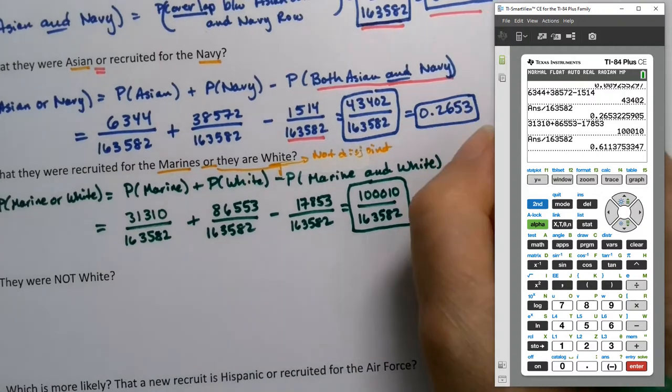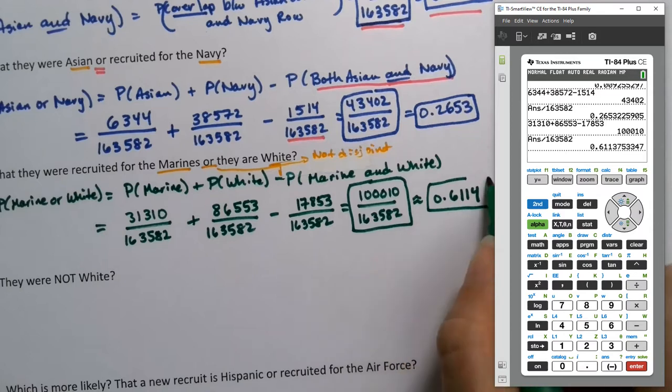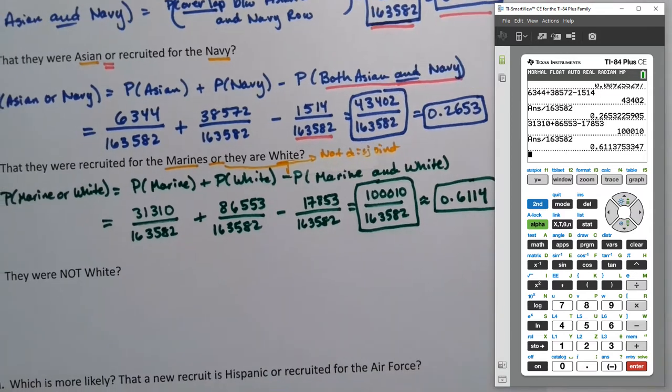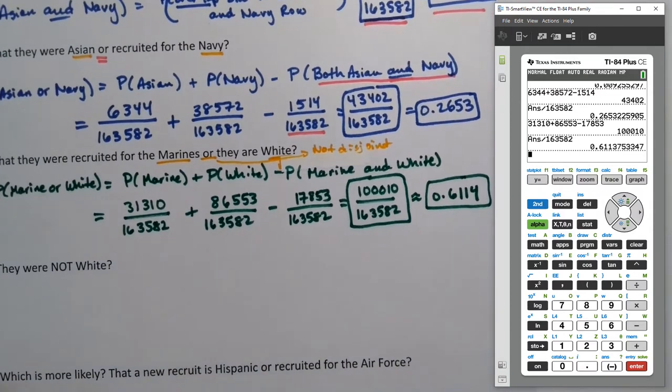I'm getting so used to 163,582. All right, 0.6114, because that three would be rounded up by that seven.